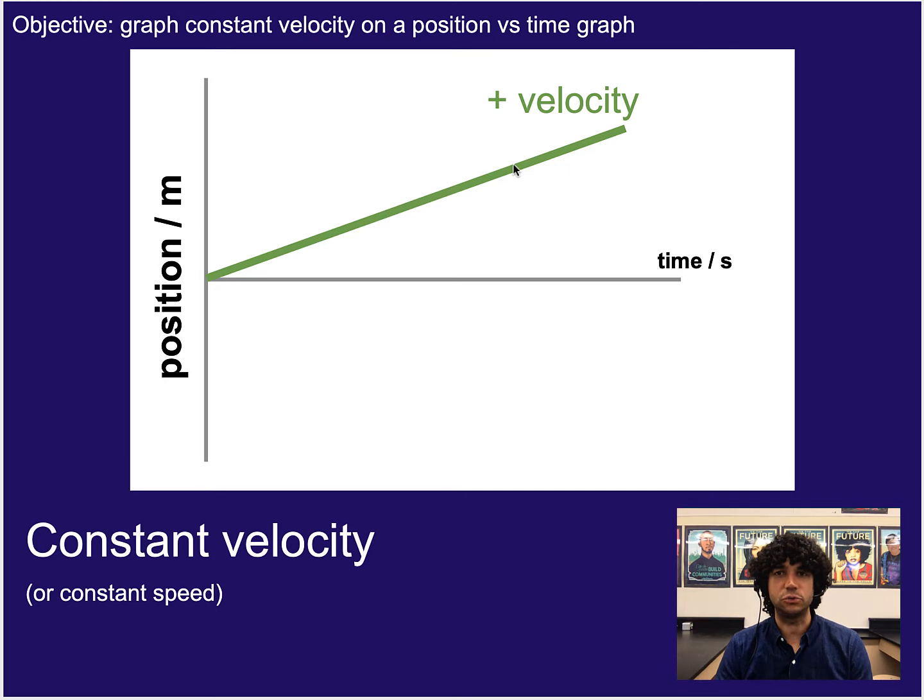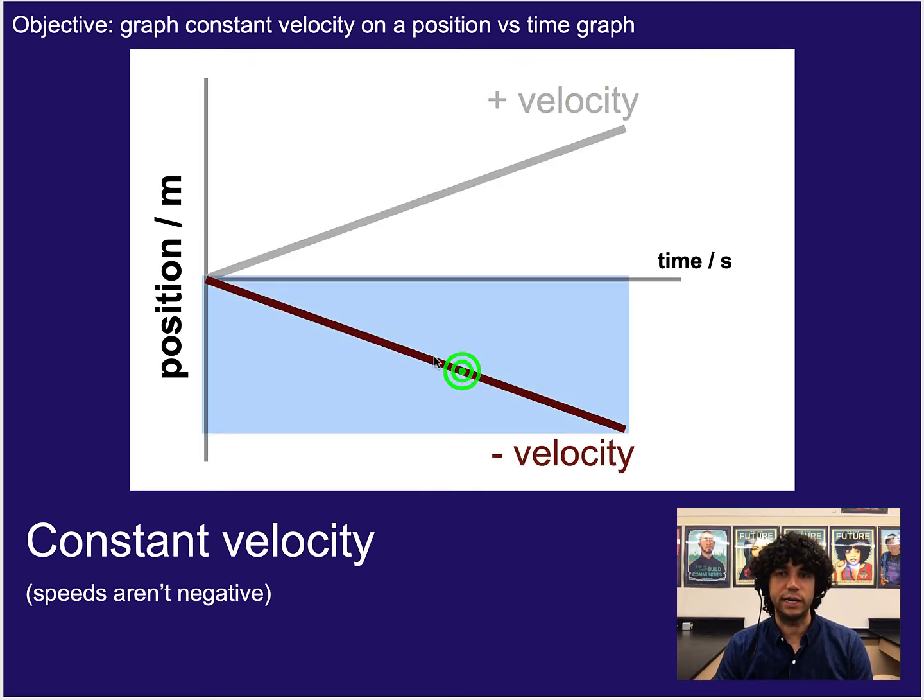Now a velocity can also be negative, meaning opposite direction. And so we can show that just by showing a line that goes down or a straight line that goes down. Remember, this would only be for velocities, not for speeds, since speeds are not negative.